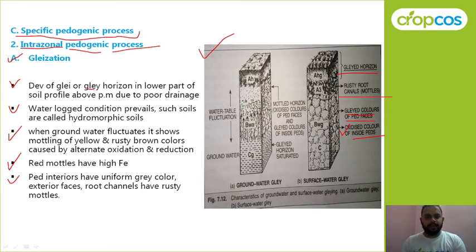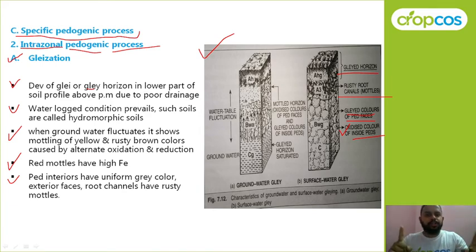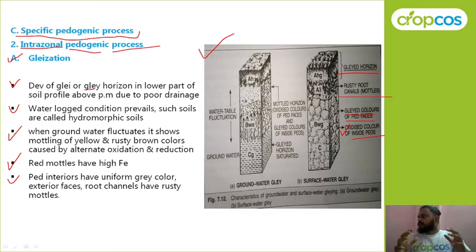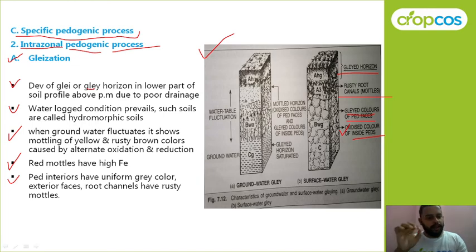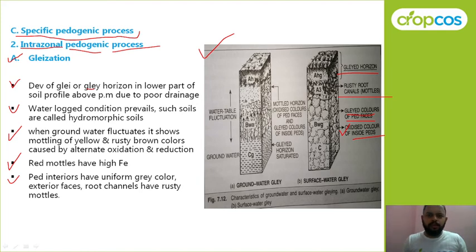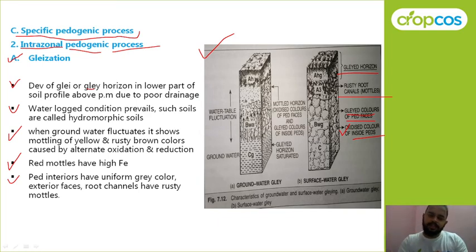For a longer amount of time under waterlogged conditions with lack of aeration, we call this soil a hydromorphic soil. Due to groundwater fluctuations, the soil shows mottling characteristics — red and yellow rust colors due to oxidation and reduction. Red mottles indicate iron content; yellow indicates iron in hydrated condition (limonite). Gleization is essentially the reduction of iron under waterlogged conditions, and the color of reduced soil is bluish to greenish. If you remember these point-wise specifics, you can give a standard answer in the exam.